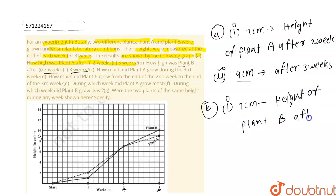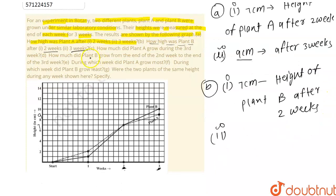The second part of B asks: how high was Plant B after three weeks? After three weeks, the height of Plant B is 10 centimeters.